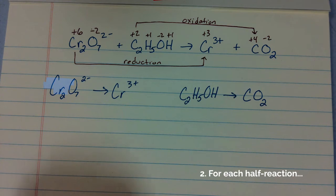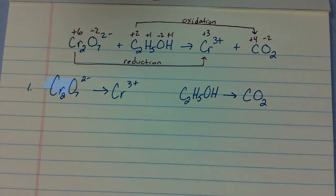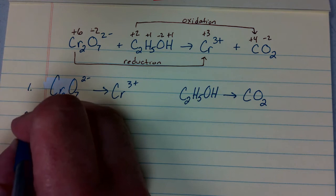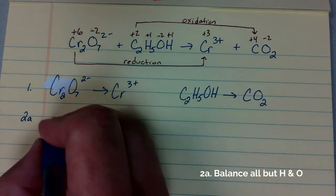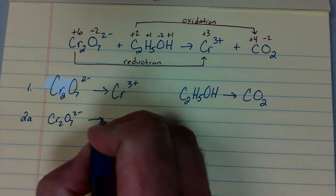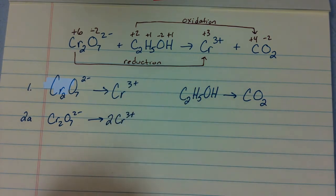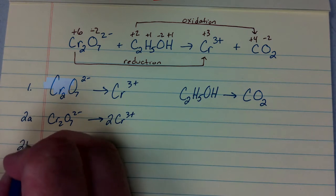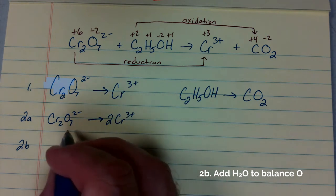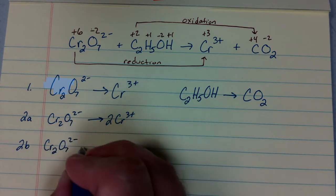Let's start with the reduction half-reaction. We'll first balance all the elements except for hydrogen and oxygen. We're going to balance chromiums using a coefficient of 2 on the chromium 3 ion on the right. Next, we'll balance oxygens by adding water molecules to whichever side needs more oxygen. There are 7 oxygen atoms on the left, so we're going to add 7 water molecules to the right.